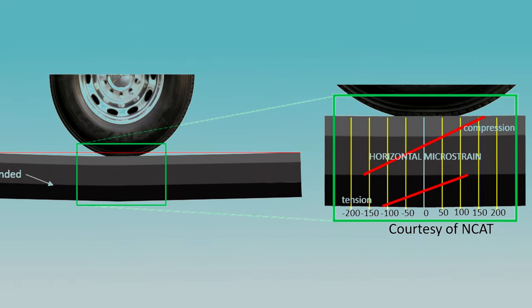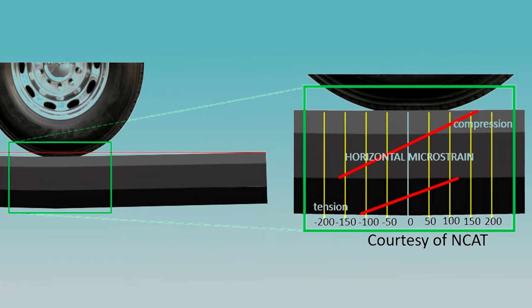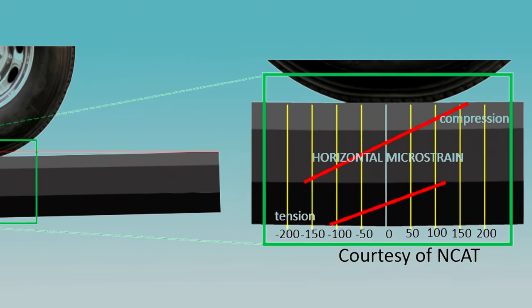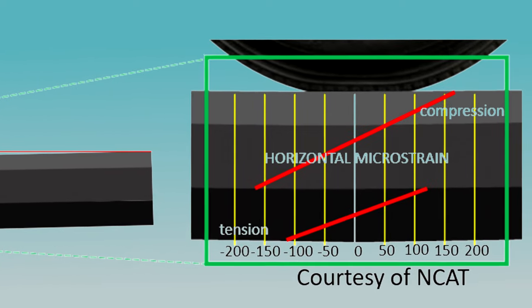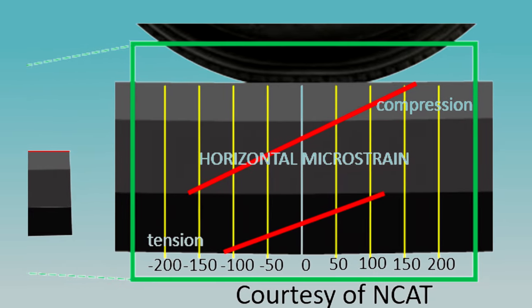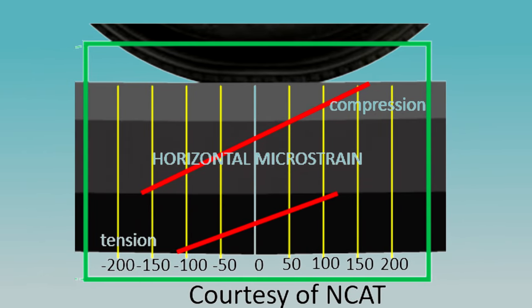If there is debonding between the intermediate layer and the base layer, the amount of horizontal microstrains peaks at higher levels both at the top and bottom of the uppermost debonded layer. A 50 percent increase in strain occurs, and if the layer is unable to handle the strain, a bottom-up crack will begin at the area of debonding and propagate upwards, further diminishing the capacity of the roadway to perform as designed.